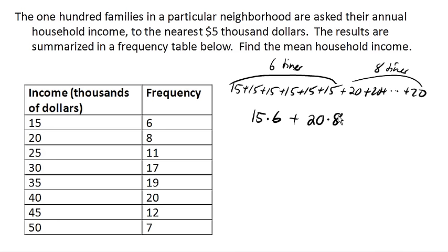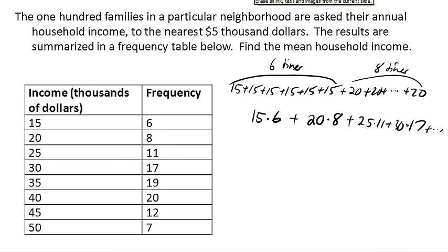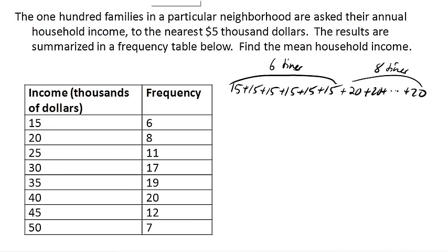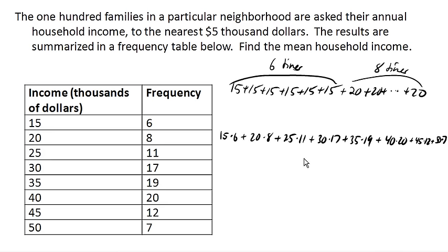This makes life really easy because now I can also add 25 times 11 and 30 times 17. In other words, I'm going to add the score — the income value — times the frequency. So if I calculate all that out and add up all of our incomes times frequency...